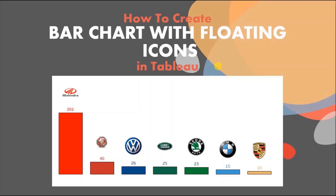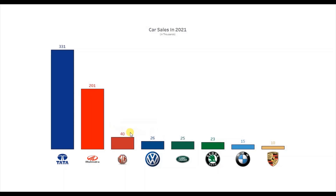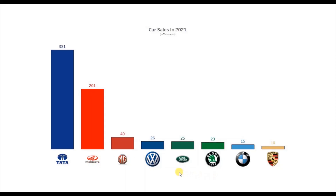In today's session we will see how to create a bar chart with floating icons. Here I have a bar chart that shows sales of different car brands in the year 2021 in terms of thousands. Instead of giving the name of the car brand as the header below each bar, I have used the logo of these car brands as the header to make a good-looking bar chart. These are custom PNG images downloaded from the internet and added to the Tableau repository.